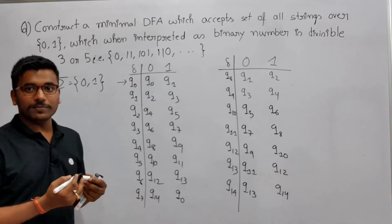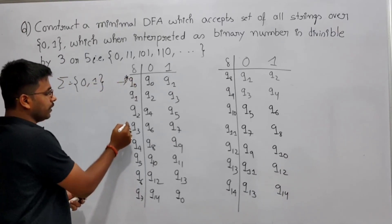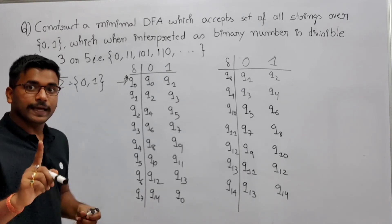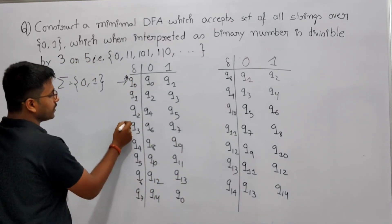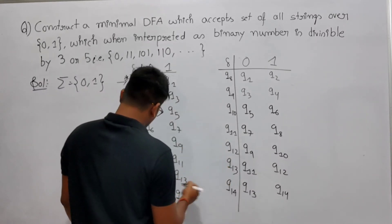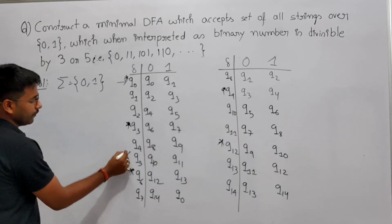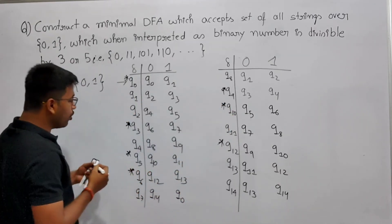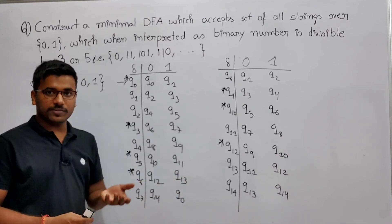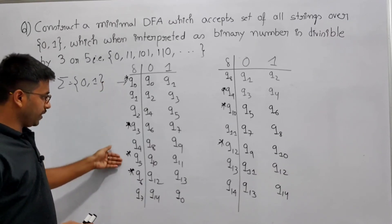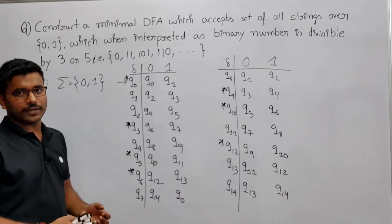When the remainder is 0, the number is divisible by 15, meaning divisible by both 3 and 5. When the remainder is divisible by 3 — that is, remainders 3, 6, 9, 12 — those states are also final states. For divisibility by 5, remainders 5 and 10 are also final states. So you get 7 final states in total, and you require minimum 15 states for this DFA.